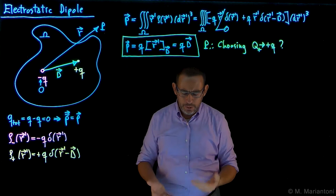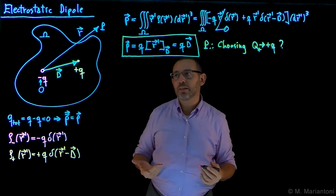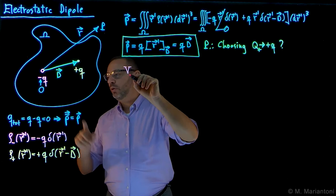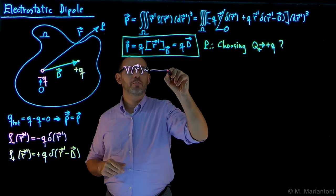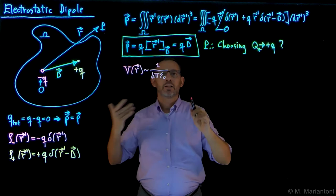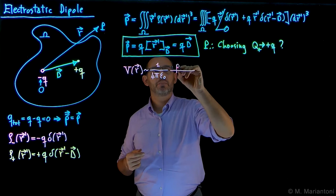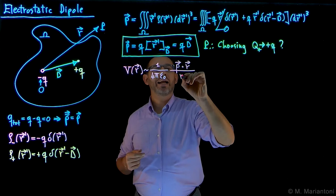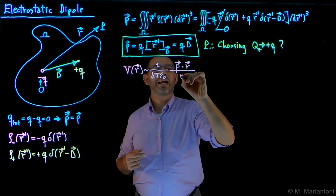Now we know the dipole moment of an electrostatic dipole. The next thing to investigate is the electrostatic potential, and from it, the field associated with such a potential. Since the monopole is zero, V(r) is approximately equal to 1 over 4π ε₀ times p dot r divided by r³. This is the approximation when observing the electrostatic dipole from far enough away.